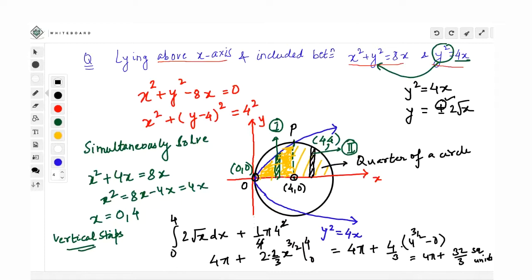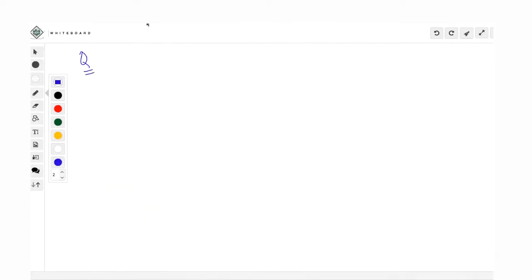Is that clear, guys? All right. Now, let us move on to another problem. Can I erase the screen now? Good. Next is: find the area bounded by y = x³ - x and y = x² + x. Please try this out. Again, please do not look at the screen till you have made the graphs of these corresponding curves.